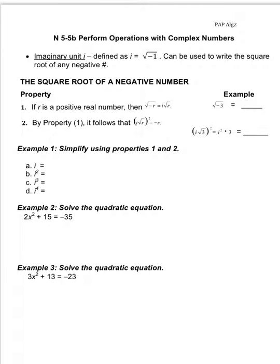Before we get into complex numbers, we're going to talk about the imaginary unit i. That's an imaginary number — i equals the square root of negative 1, and it can be used to write the square root of any negative number.